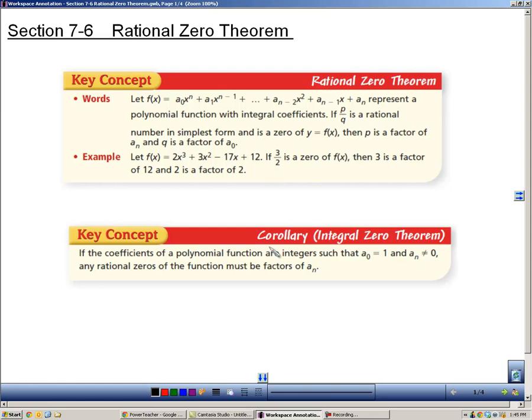According to the theorem, the P, the top number, has to be a factor of the last term in the polynomial, and the Q, the bottom number, has to be a factor of the first term in the polynomial. You see an example here of 3 over 2 being a zero, and notice that 3 is a factor of 12, and 2 is a factor of 2.